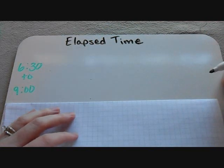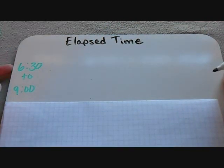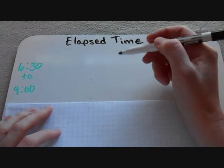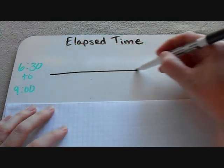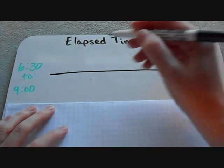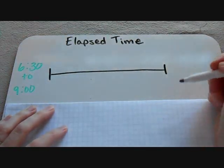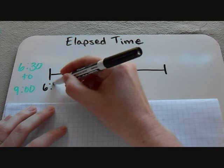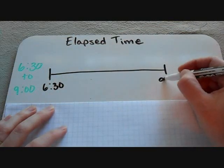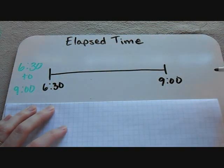So if we're trying to find the elapsed time between 6:30 and 9 o'clock, then what I usually do to show my students how to do this is set up a timeline. So I've got my beginning and end, and I'm going to label my two times on here, beginning and end.